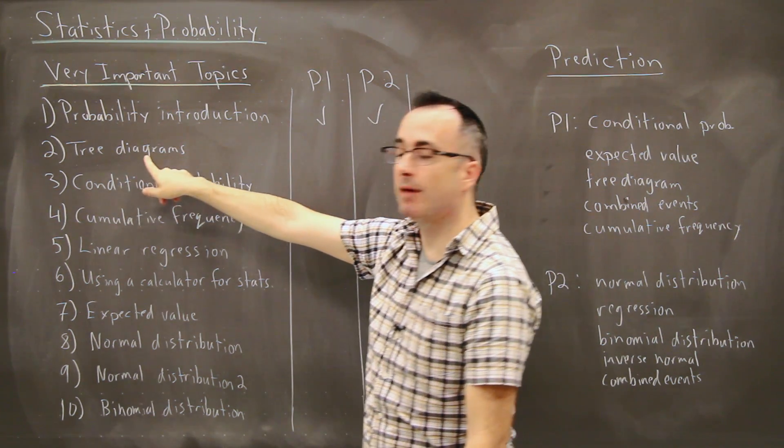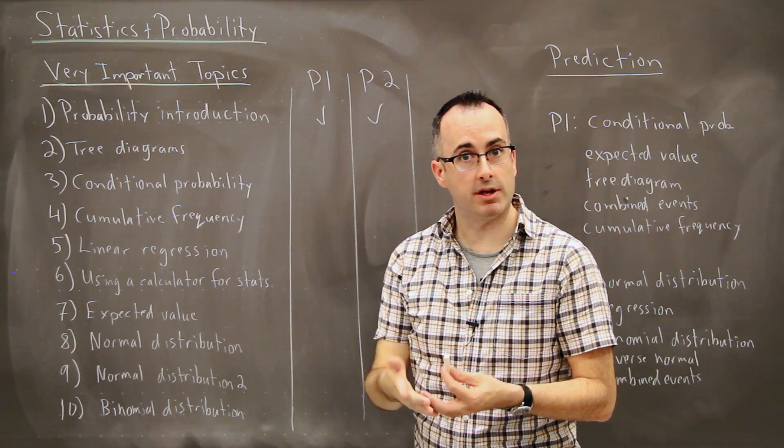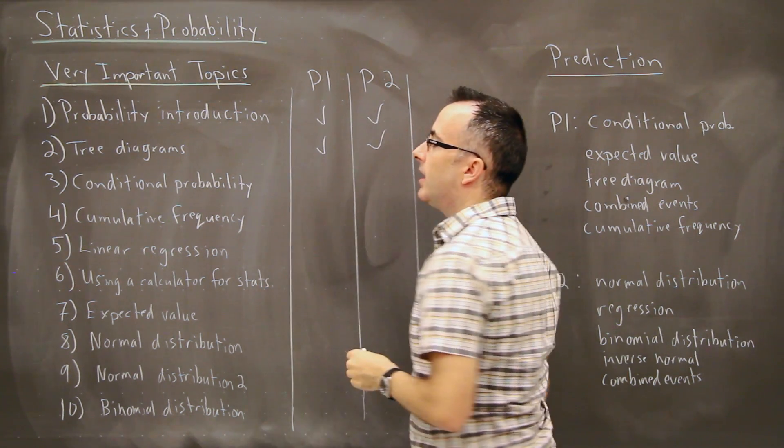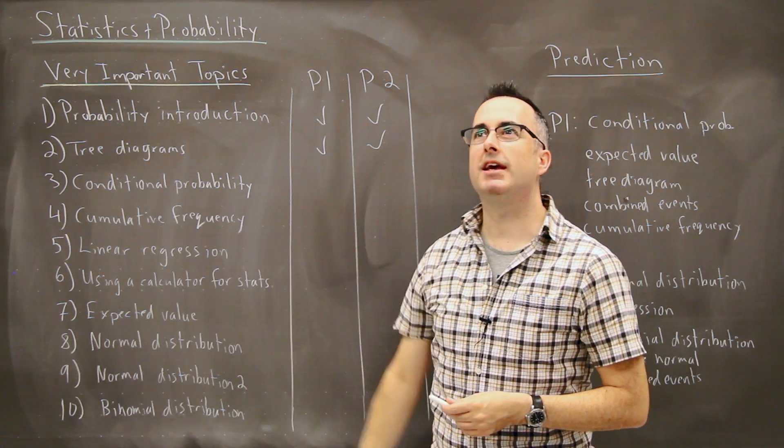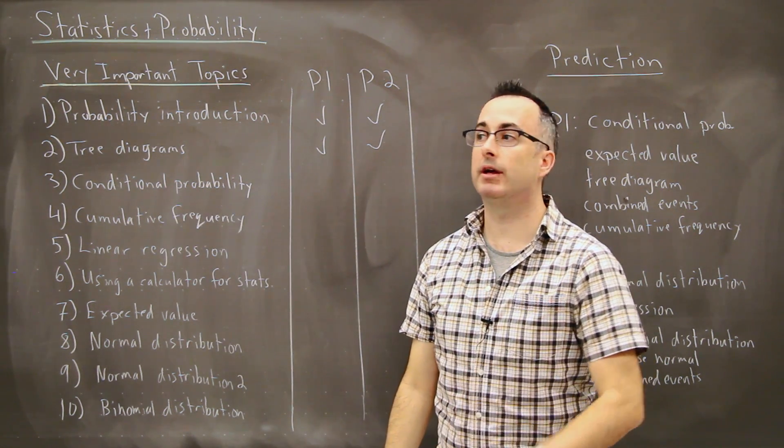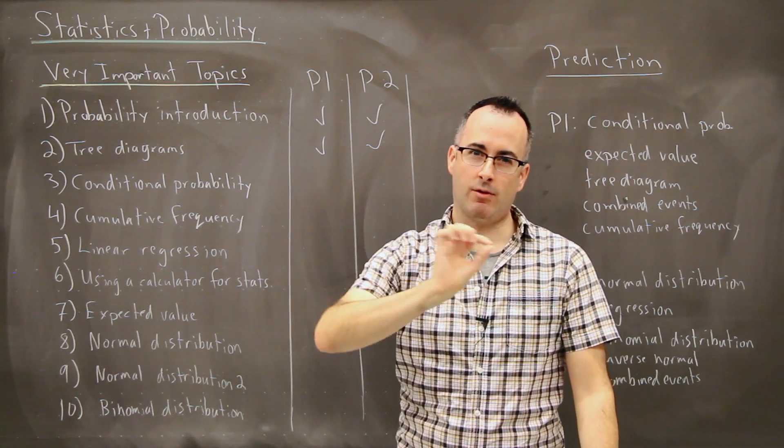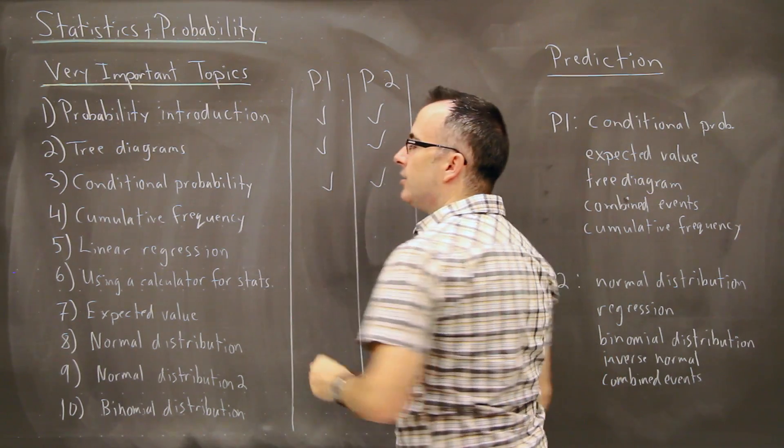Next we have tree diagrams. This is a nice skill to help to make complicated-looking probability questions look a little bit easier. Those show up pretty evenly on paper one and paper two. Next we have conditional probability. This is what do you do if you're given information like a probability of one thing happening given that another event happened. This is a matter of notation here. This shows up paper one and two as well.